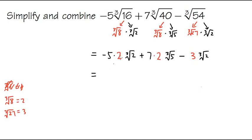My next step is to multiply these numbers out. Negative 5 times 2 is negative 10, and this is the cube root of 2. Next one is plus 7 times 2 is 14, but this is cube root of 5. And then the last one is minus 3 cube root of 2.